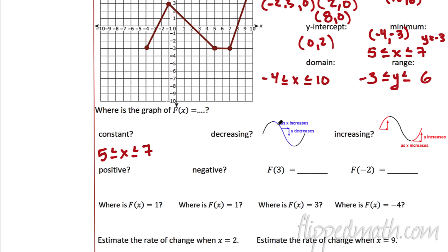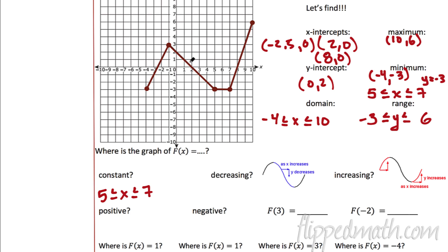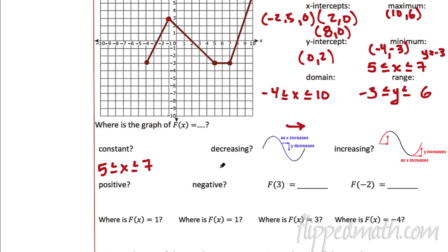Decreasing means as x increases, y decreases — it's going downhill as you go from left to right. Students get confused because they go the opposite way — we're always traveling to the right. This graph decreases from here going downhill to here; the rest is either staying constant or increasing. So we write the domain: this occurs from negative 1 all the way to 5. From negative 1 to 5 using a compound inequality — that's where it's decreasing.